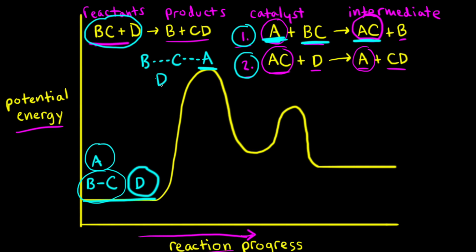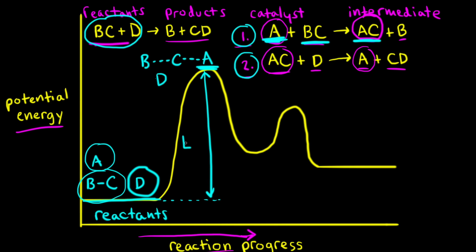When A collides with BC, the collision has to have enough kinetic energy to overcome the activation energy necessary for this reaction to occur. On this energy profile, the activation energy is the difference in energy between the reactants and the transition state — the very peak of the hill. This difference in energy corresponds to the activation energy for the first step of the mechanism, which we will call EA1.